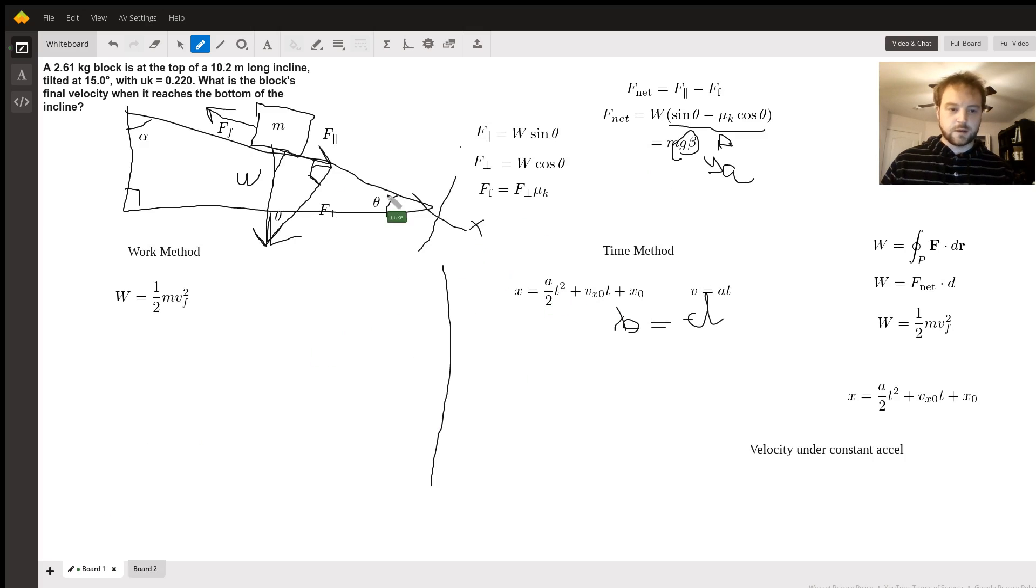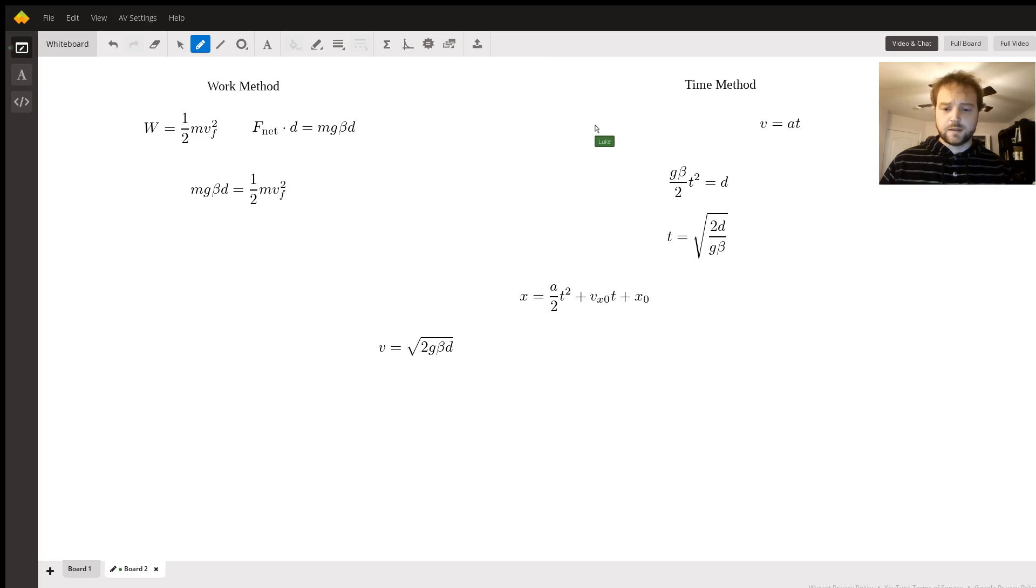So we have this first equation here, which is just the general form. And we have the fact that under constant acceleration, the velocity is going to be equal to a times the time. So we can use this to solve for the time. There's no initial velocity because it's at rest. This is going to be -d, and this a is going to be g times beta. Plugging that in, if we set that equal to zero because we want it at the end of the coordinate system, we'll get g*beta/2 * t² = d, or t equals the square root of 2d/(g*beta).